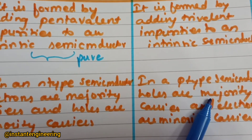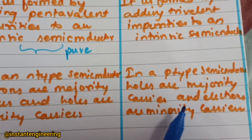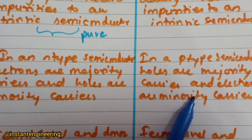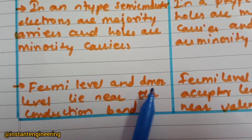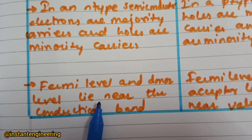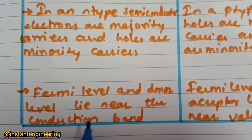Here with trivalent — three valence electrons — obviously the holes will be the majority carriers and electrons will be the minority carriers in p-type.